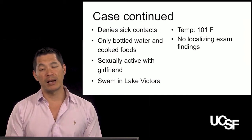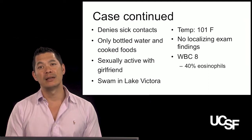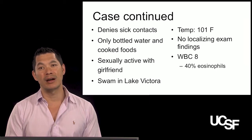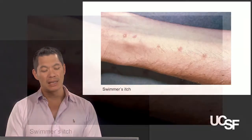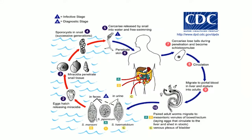Temperature is 101°F, no localizing exam findings, white count of eight with 40% eosinophils — a whoppingly large eosinophil count above 20%. He described having swimmer's itch. This disease process is called schistosomiasis.